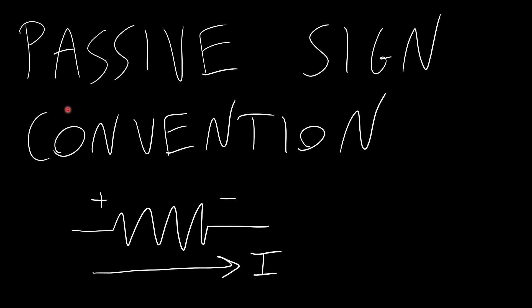All right, in this video we are going to talk about something I have been kind of glossing over so far, the sign convention for passive circuit elements like resistors. This is something again that we've been kind of ignoring but we are going to need to start keeping track of as we start analyzing more complex circuits.